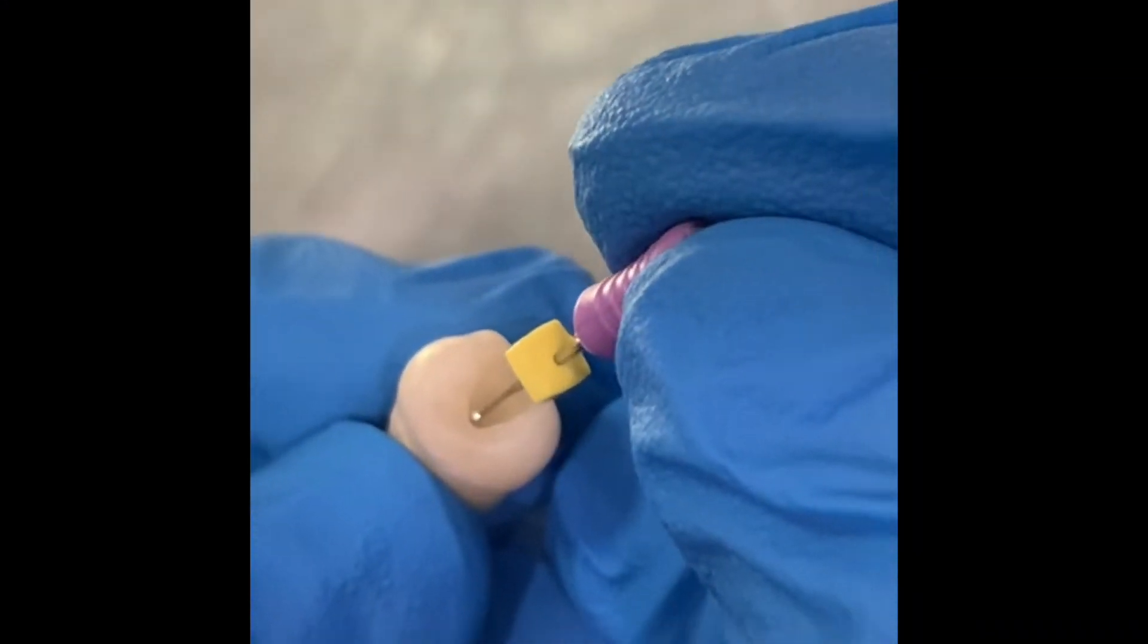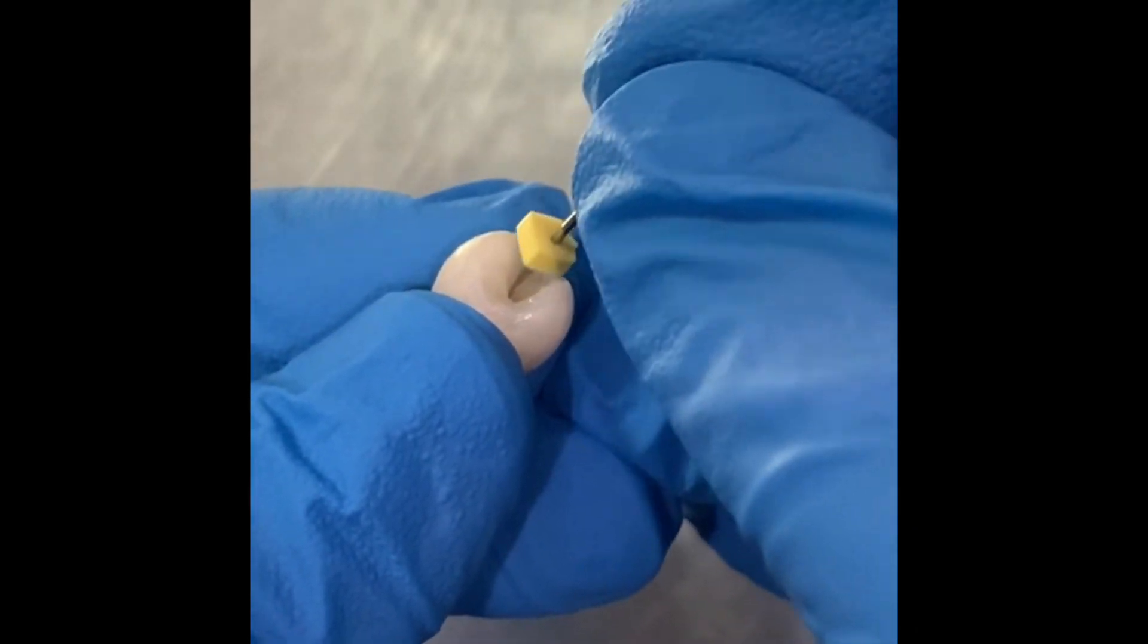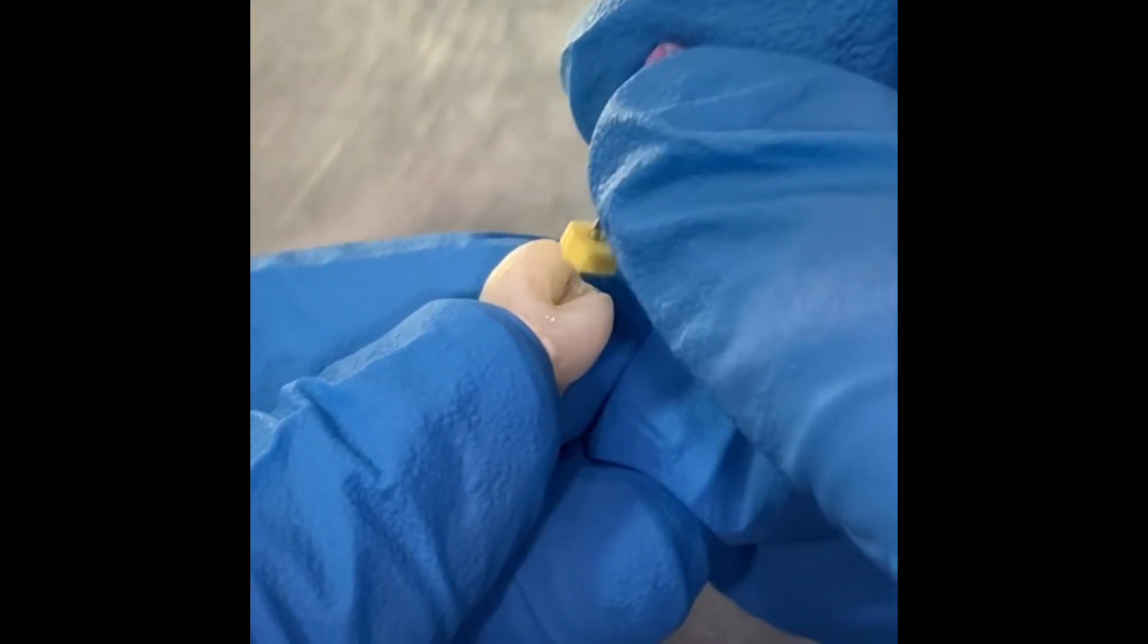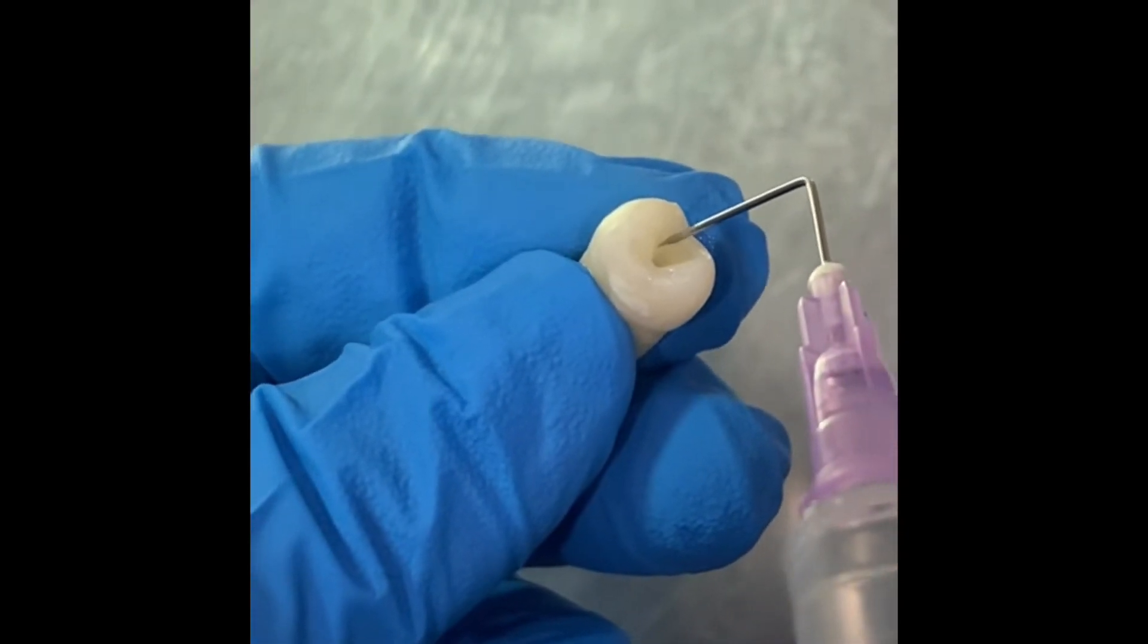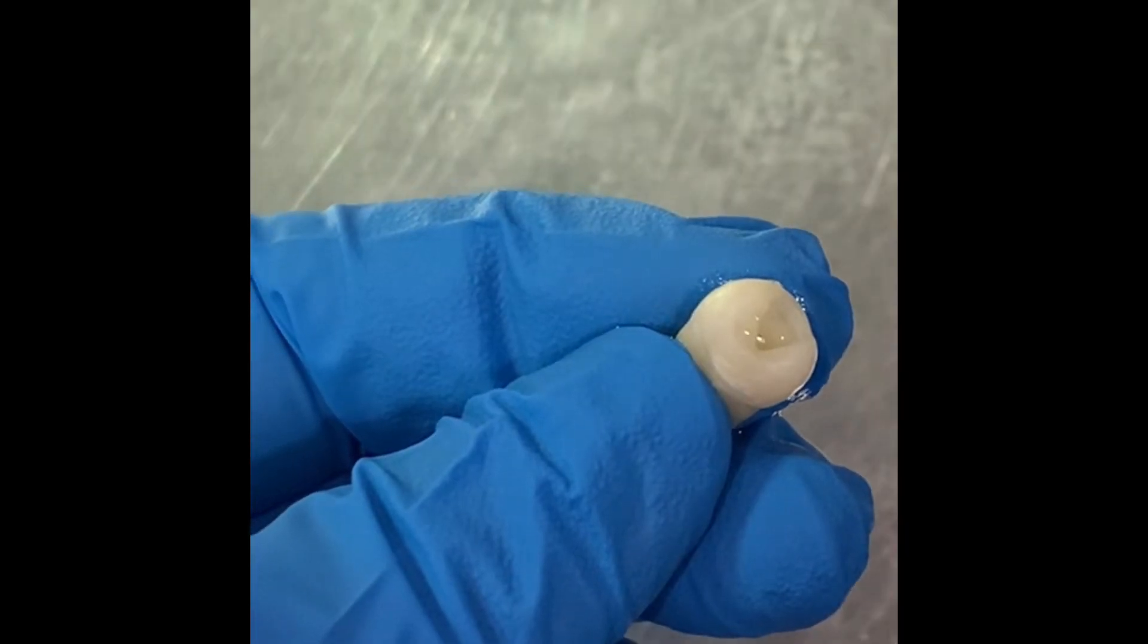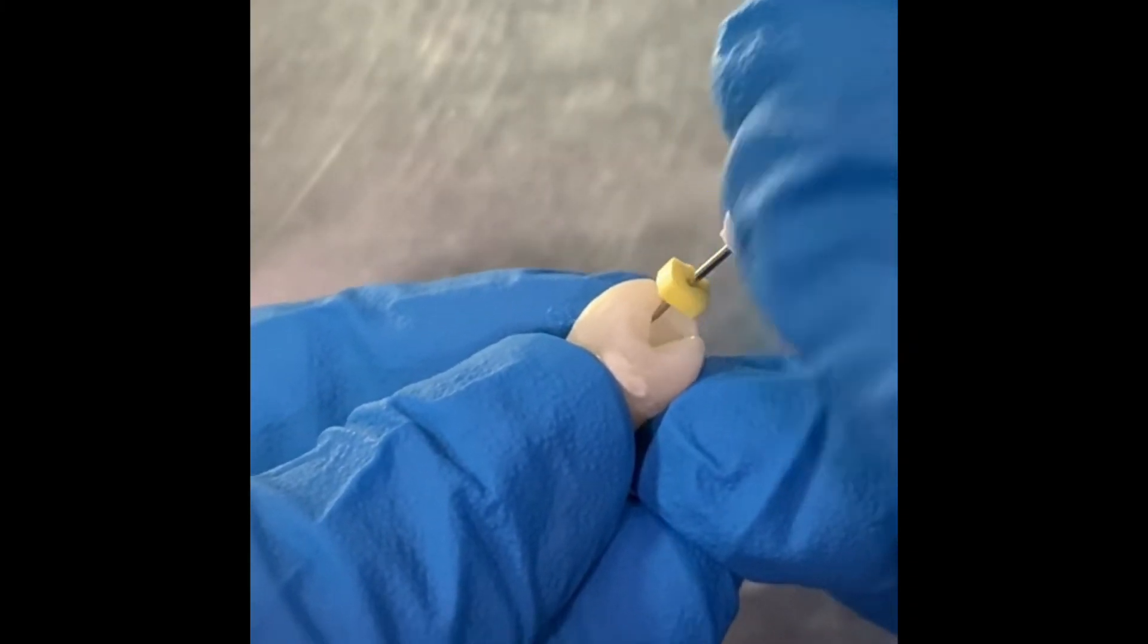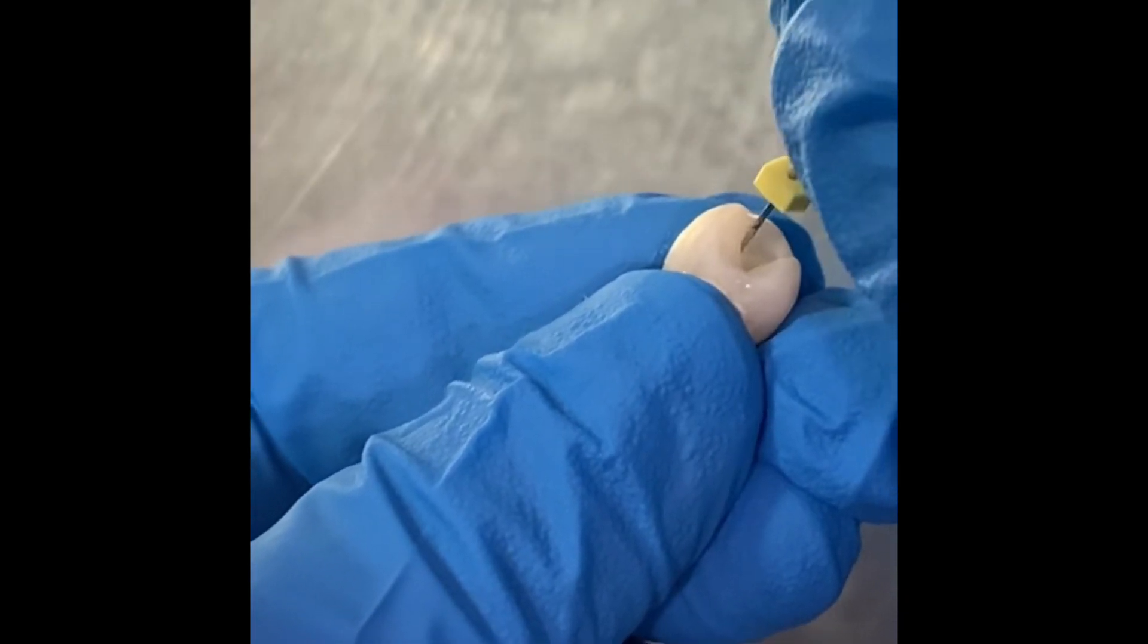Establishing the glide path is a very important step. It basically means slightly enlarging the canals with 10 to 15 number hand files before we use the rotary files. So we've taken a 10 number file, marked the working length with a rubber stopper, and enlarged the canal. We follow with a 15 number file. We continue filing till our files get loose in the canal, so now we can be sure that our rotary file can easily flow into the canal.